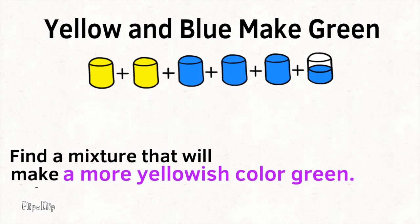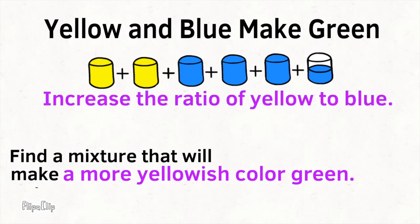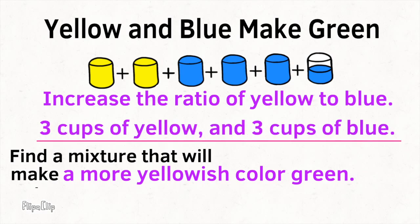Find a mixture that will make a more yellowish color green. To make a more yellowish green color, we'd have to increase the ratio of yellow to blue. To increase the ratio of yellow paint to blue paint, we can either increase the amount of yellow paint, or decrease the amount of blue paint, or do a combination of the two. In this example, I used 3 cups of yellow paint and 3 cups of blue paint to make a more yellowish color green.